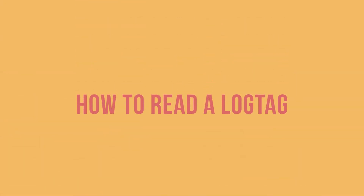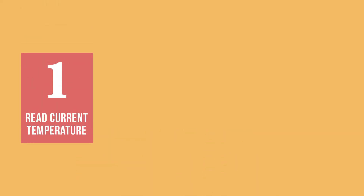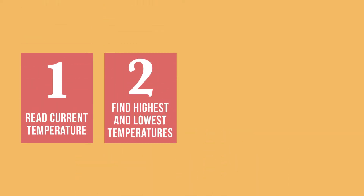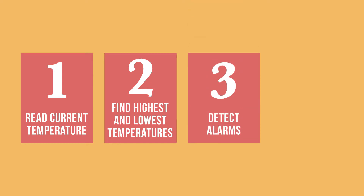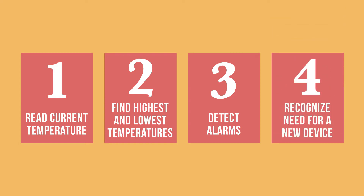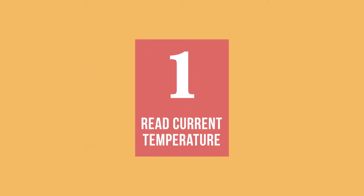Now we will show you how to read and interpret a log tag. There are four tasks you must be able to do on your log tag: read the current temperature; find the highest and lowest temperatures recorded for the past 30 days; determine whether any temperature alarms have been triggered and when; and recognize when you need a new device. We will start with the first of these tasks, reading the current temperature on your log tag.